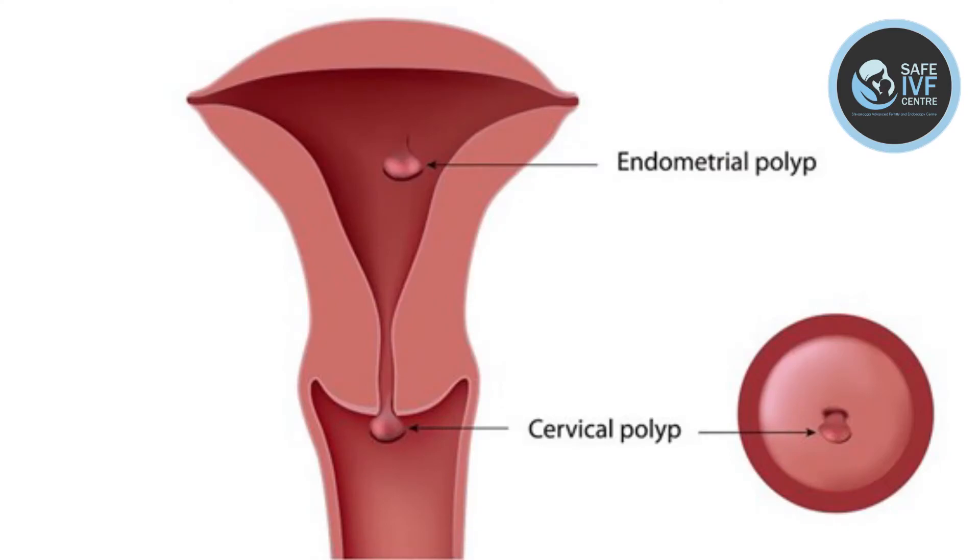If you have a polyp, it can be located in the endometrium, in the fundus, in the tubes, in the corneal area, or in the body of the uterus.